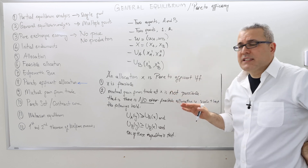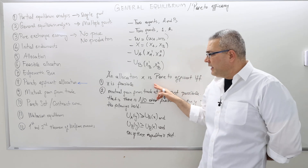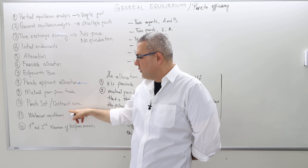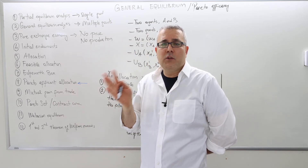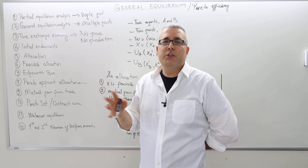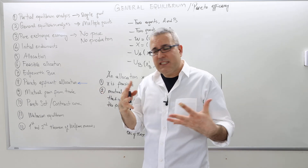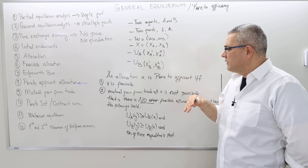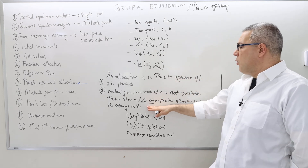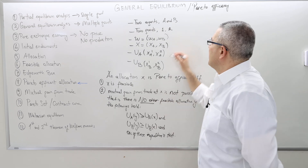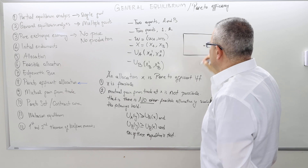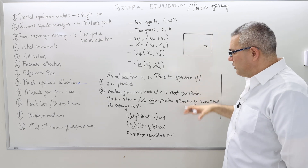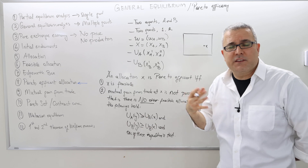The negation of this statement is important because proving an allocation is Pareto efficient is pretty difficult. We will later talk about the Pareto set and contract curve, and I'll tell you how we find all the Pareto efficient allocations, at least once the utility functions are nice. However, this question is hard to answer — is an allocation Pareto efficient? You have to make sure there is no other feasible allocation satisfying this. In the Edgeworth box, there are infinitely many possible Y's that you have to check, so sometimes verifying this is very difficult.